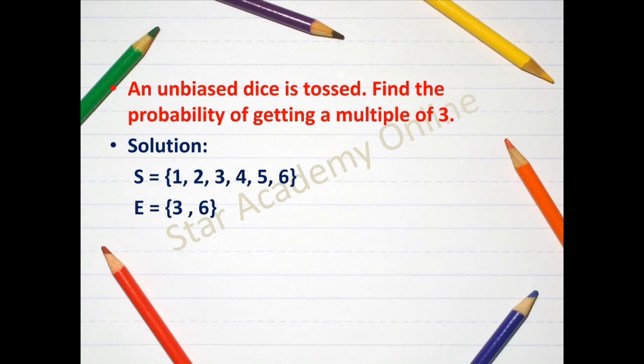Whereas the question asks you about getting a multiple of three. Multiple of three means something that can be divided by three. So we have two numbers which can be divided by three, three and six. So our sample space or sample value is going to be six, whereas our event value is going to be two.